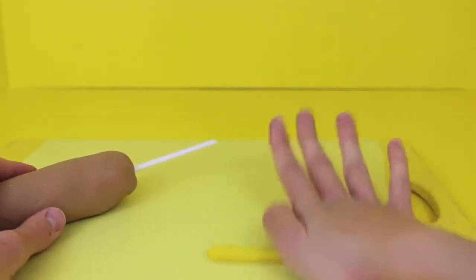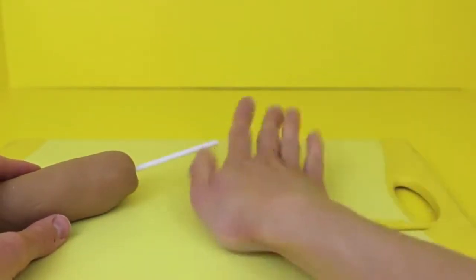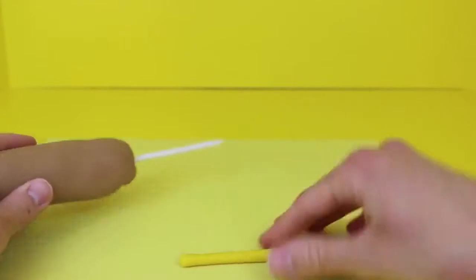The last thing I'm going to do for this corn dog just to jazz it up is add some mustard. So just roll out some yellow Play-Doh using the palm of your hand.